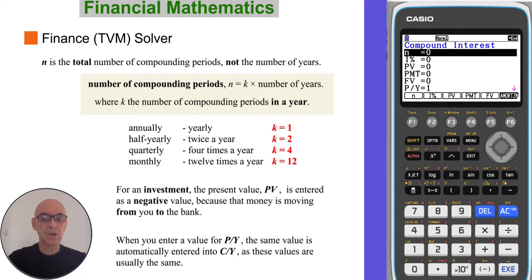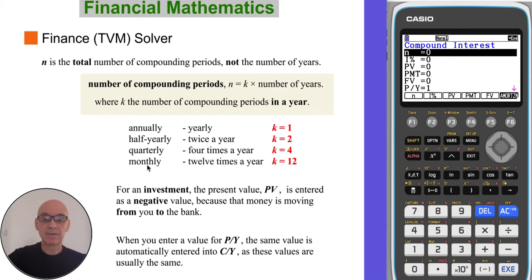N is the total number of compounding periods, not the number of years. The total number of compounding periods N is found by multiplying the number of years by K, where K is the number of compounding periods in a year. If the interest is compounded annually, then K equals one. If compounded half yearly — twice a year — then K equals two.